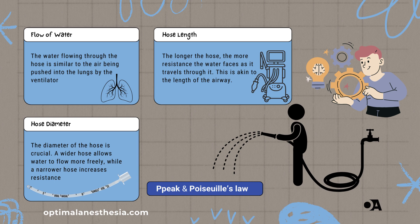Third, hose diameter: the diameter of the hose is crucial. A wider hose allows water to flow more freely, while a narrower hose increases resistance. According to Poiseuille's law, if you halve the diameter, or radius, of the hose, the resistance increases by 16 times, since resistance is inversely proportional to the radius raised to the fourth power. Real-world application: if the hose gets kinked, the water flow slows down and the pressure needed to push the water increases. Similarly, if the ventilator tubing or the endotracheal tube is kinked, or if the patient bites the tube, the airway resistance increases, leading to a higher peak airway pressure.